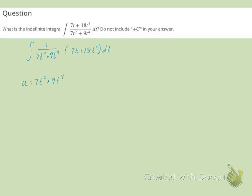which means that du is going to give me 14t plus 36t cubed dt. So I don't have a 14t plus 36t cubed.